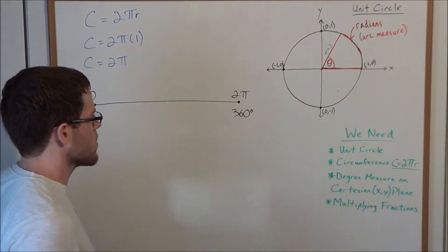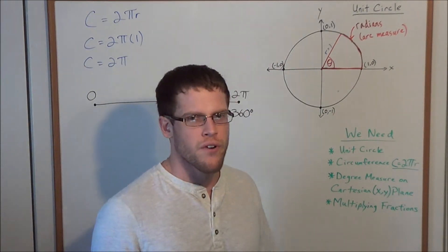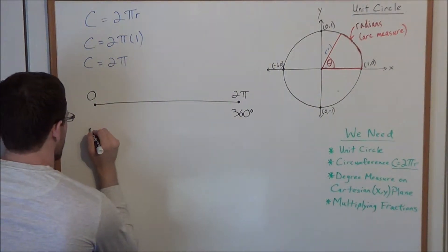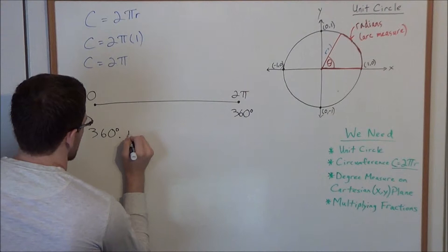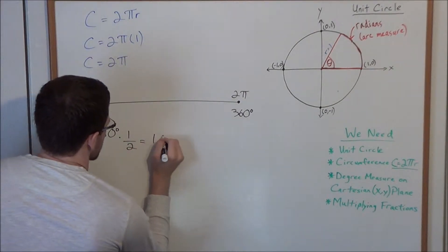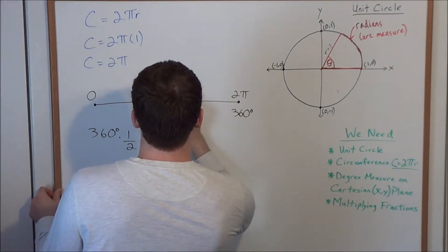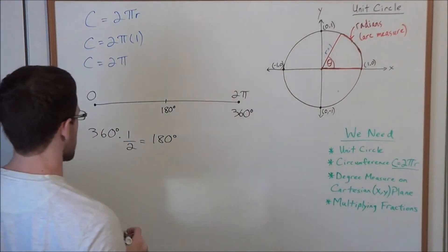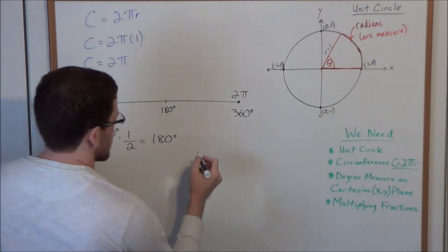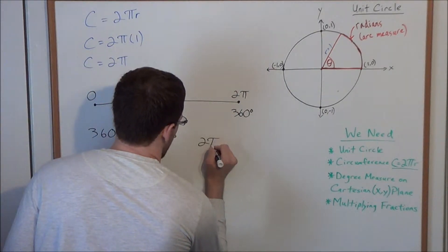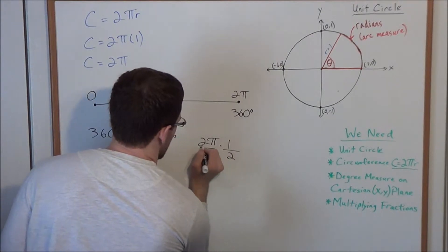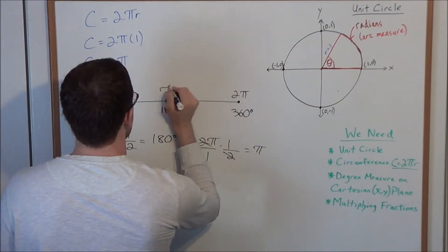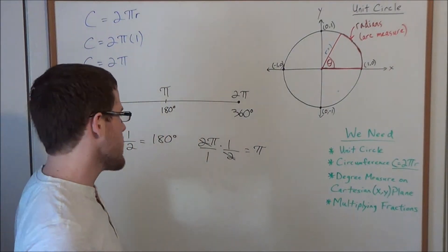Now we can also look at other values. This is where multiplying fractions comes in. Let's say we go half of the circle. Most of you I'm sure could figure out that when we spin halfway around the circle, that corresponds to 180 degrees. So at the halfway point we're looking at 180 degrees. But what happens when we go half of the circumference of the unit circle? Well then we're looking at one half of 2π, which would give us π. So π radians is equal to 180 degrees.